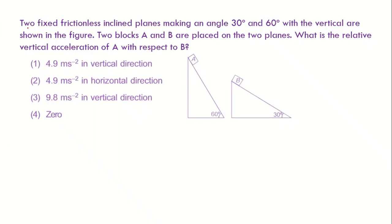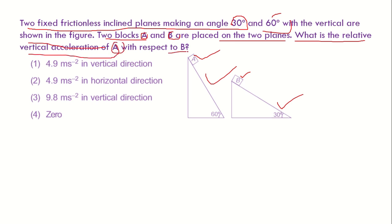In this question, two fixed frictionless inclined planes making an angle 30 degrees and 60 degrees with the vertical are shown in the figure. Two blocks, block A and B, are placed on the two planes. What is the relative vertical acceleration of A with respect to B?